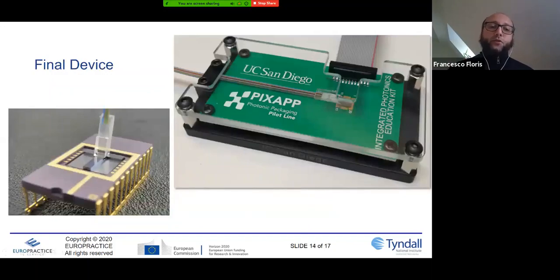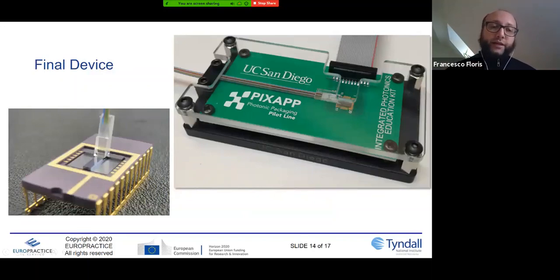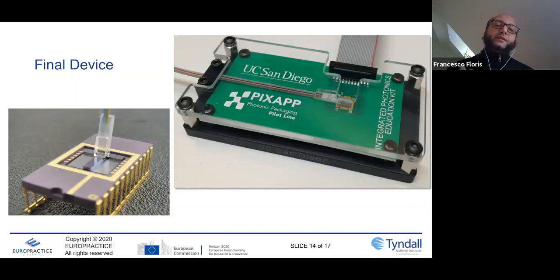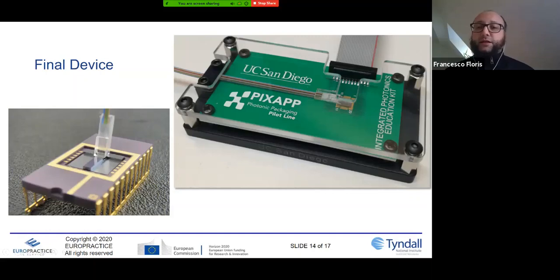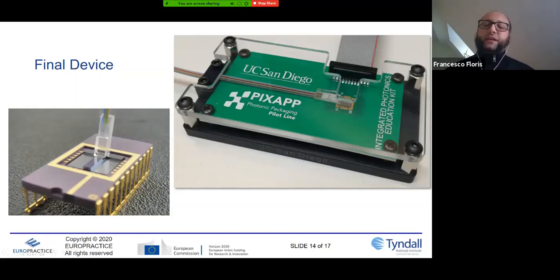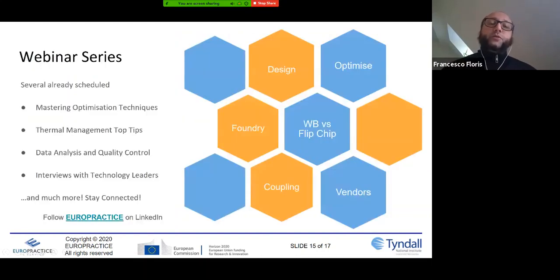Final devices: on the left, an example of a fiber array coupled via grating coupler on a silicon chip — vertical geometry. As we've seen again, this is not the best solution from a mechanical point of view; you can break the fiber. On the right — and we have to thank Speaksup and San Diego for this image — this is an example of the integrated photonic educational kit, showing an horizontally coupled fiber array on top of a silicon chip. It's clear that horizontal geometry is the best one; you can imagine how easy it is to handle compared to the vertical solution. So that's the story with the grating couplers.